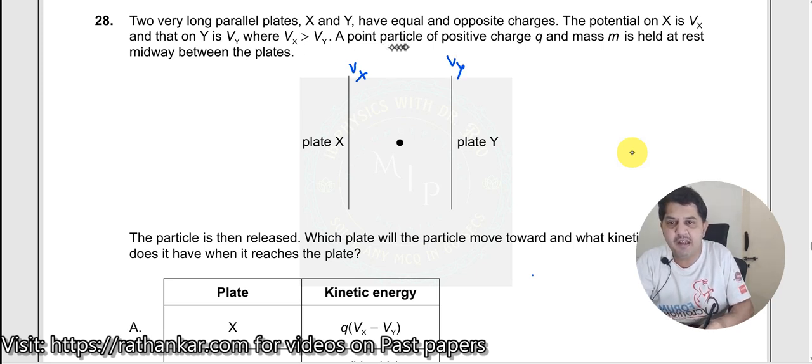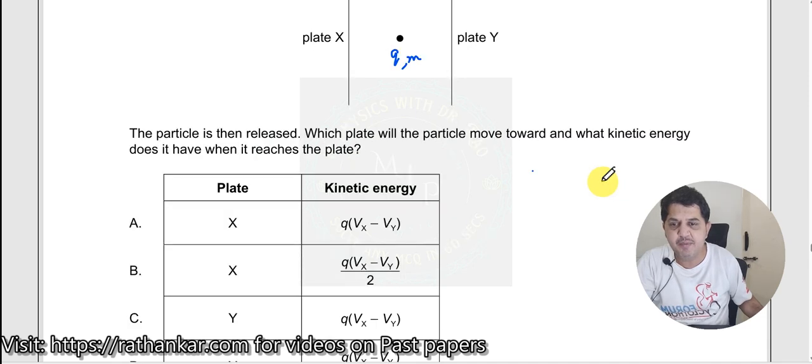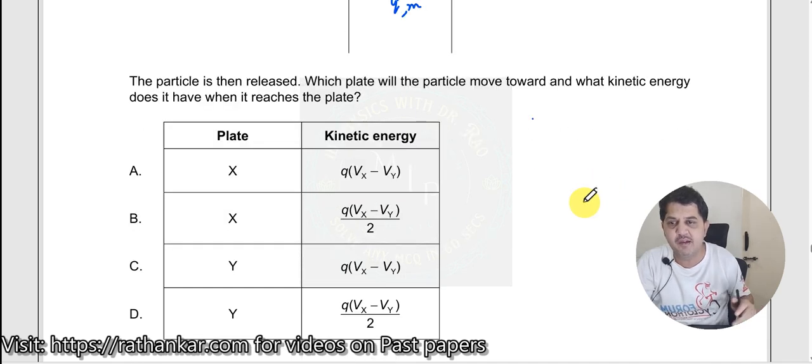A point particle of positive charge Q and mass M is held at rest between. Here you have Q, this is mass M. The particle is then released. Which plate will the particle move towards and what kinetic energy does it have when it reaches the plate?